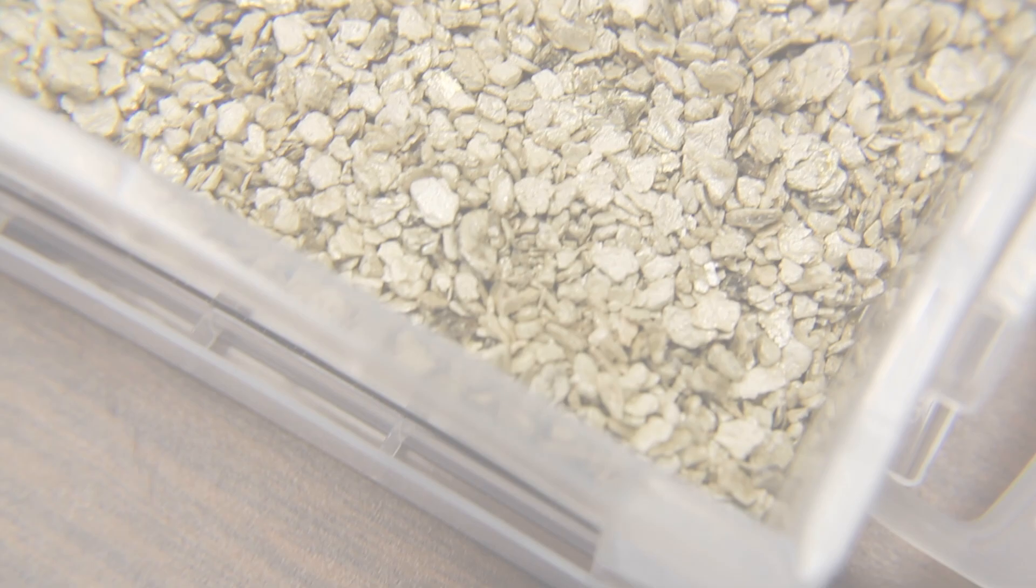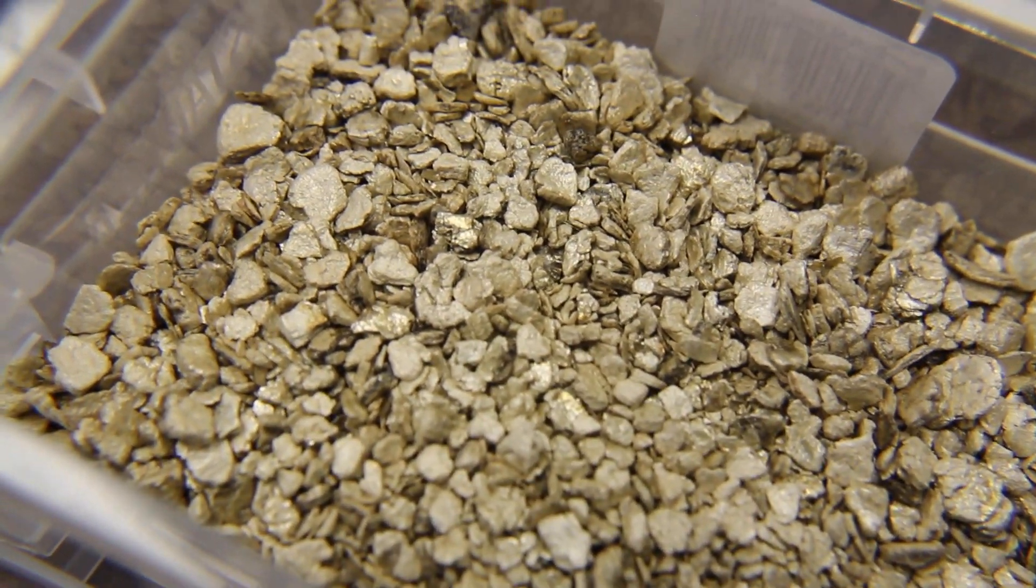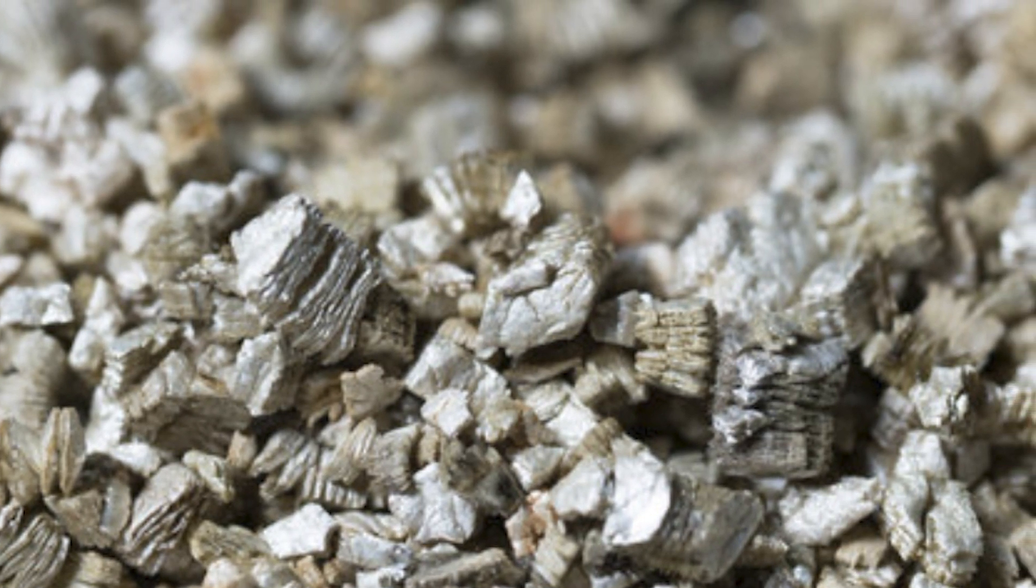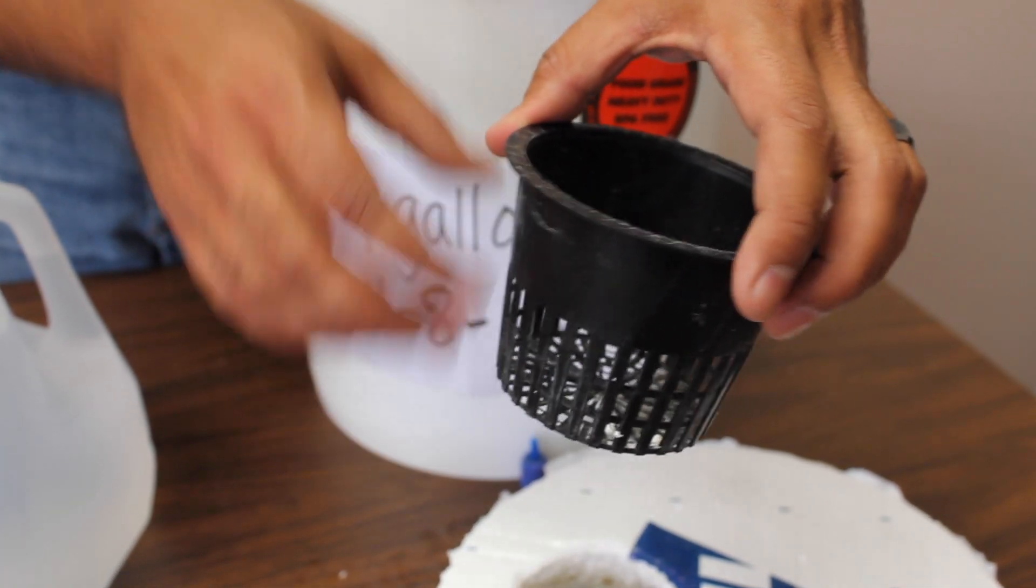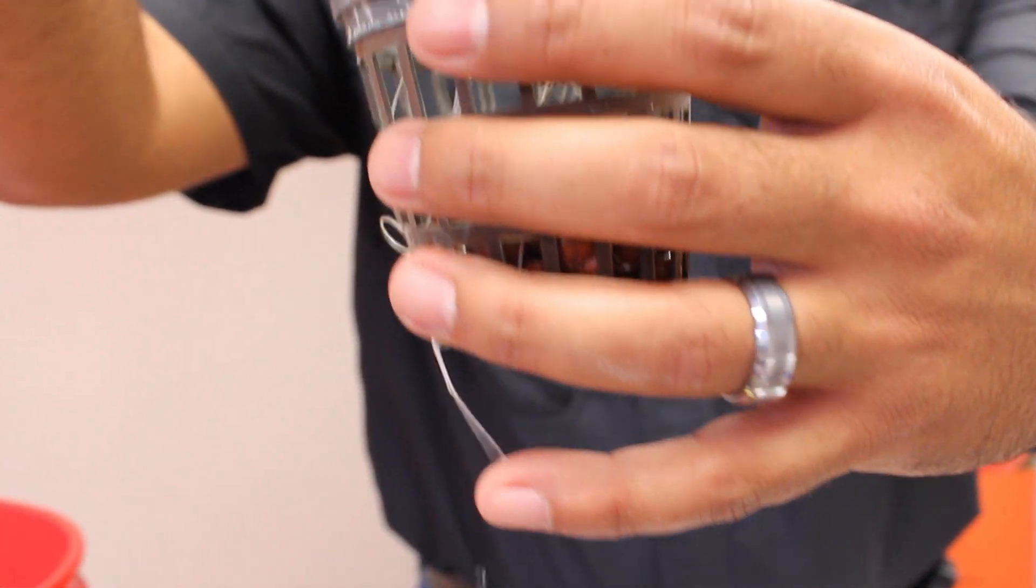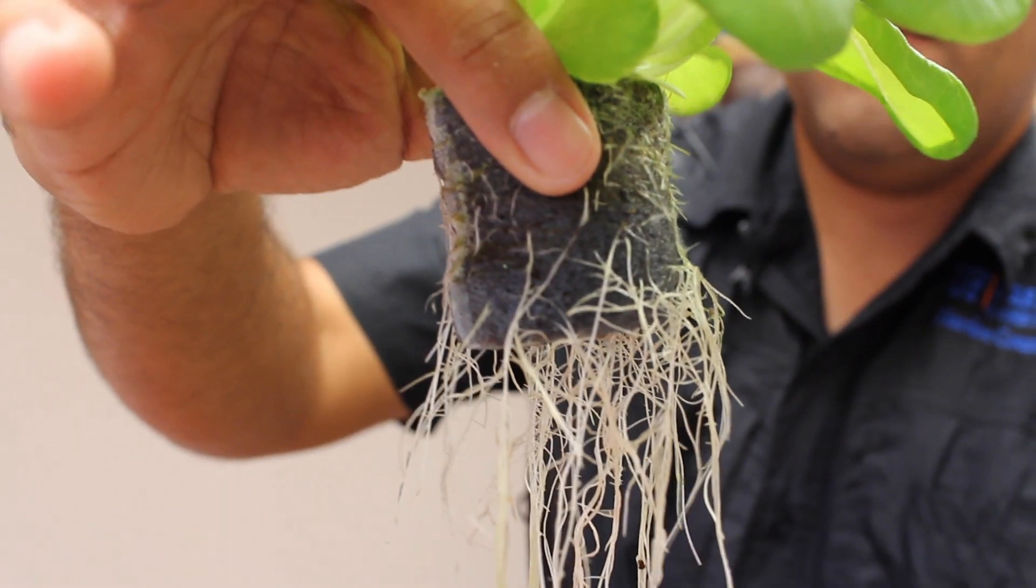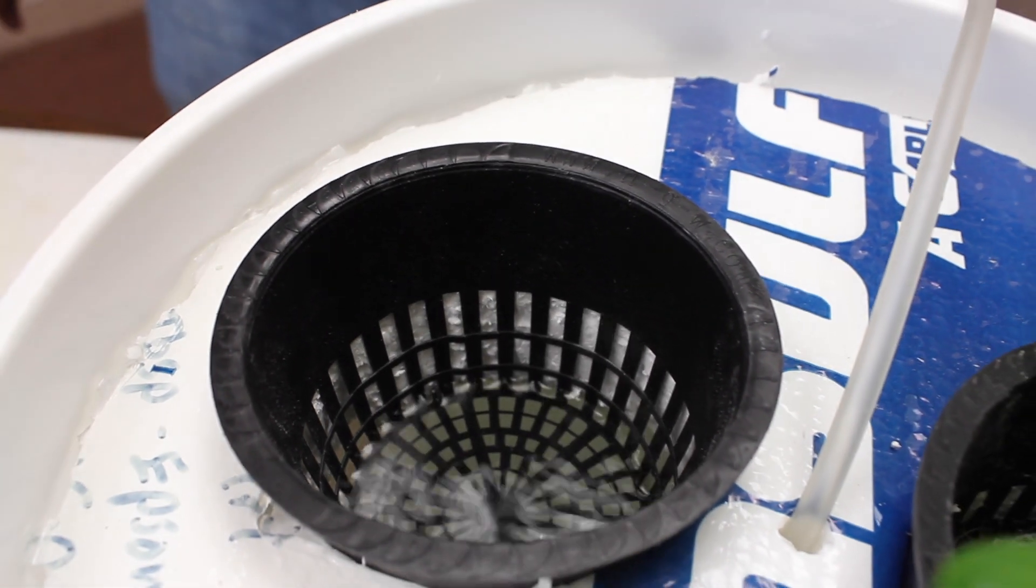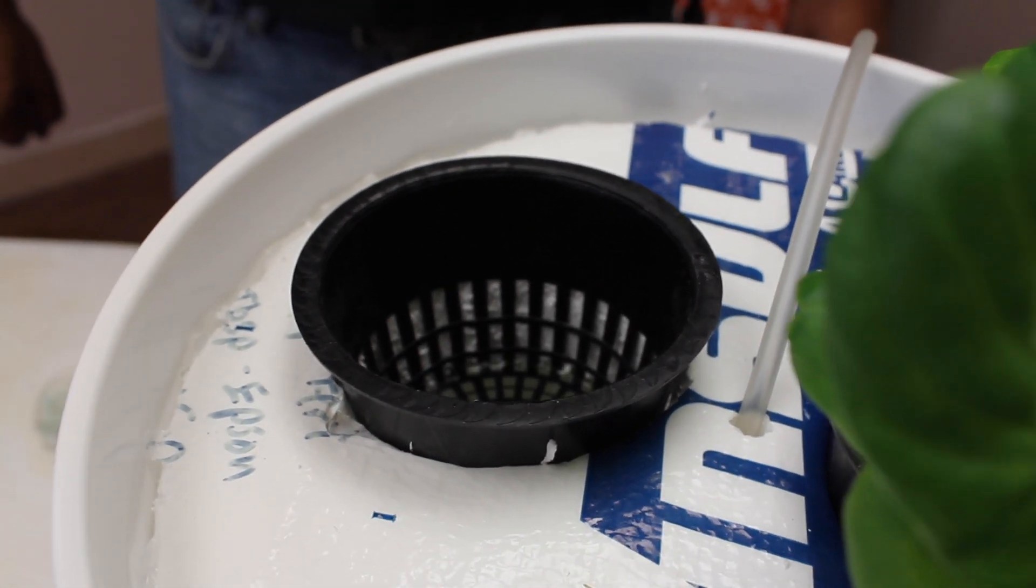And then we have vermiculite, which is probably more money than what I would like to pay for. The important thing is that the media stays where it's needed at the root zone and not in the solution. Vermiculite particularly has that problem of flowing through the system.